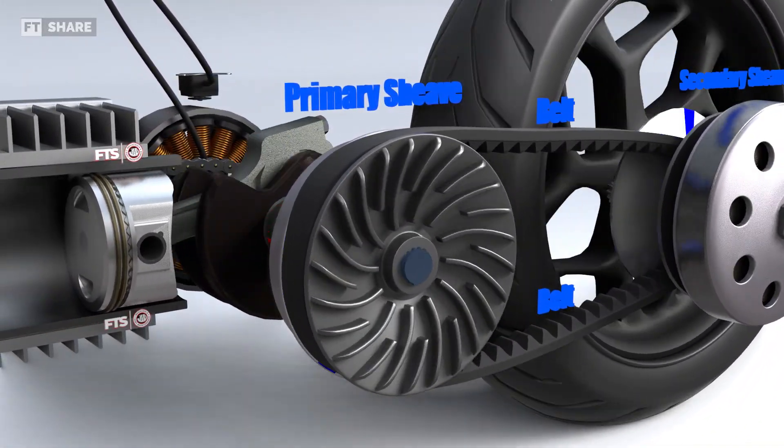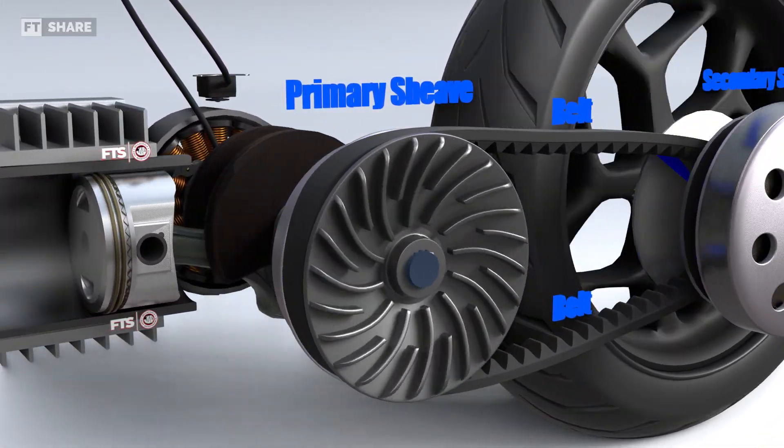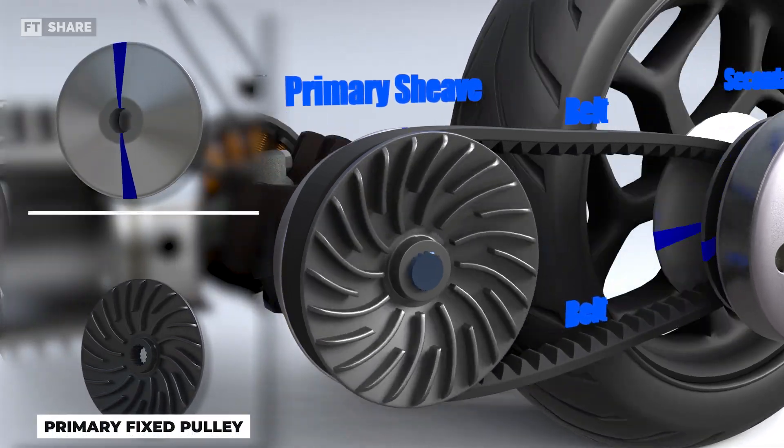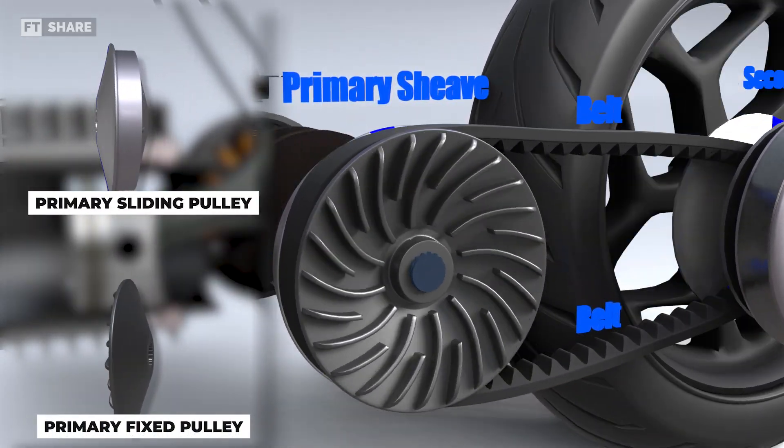We'll start by looking at the primary pulley, which typically consists of two conical plates, the primary sliding pulley and the primary fixed pulley.